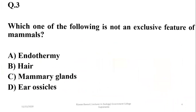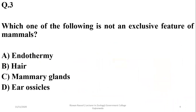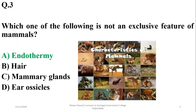Question 3: Which of the following is not an exclusive feature of mammals? Mammals have mammary glands and erect ossicles as their exclusive features. However, endothermy is not an exclusive feature — it is also shown by birds. So the right option is A.